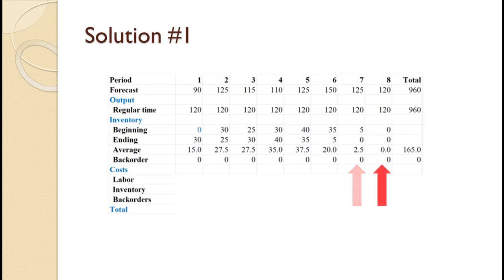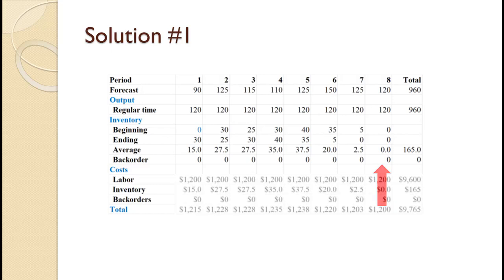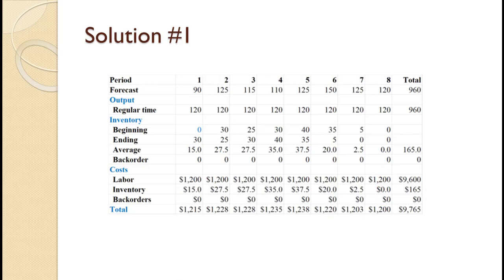For period 8, production and demand are both 120 so inventory remains at 0 and the average inventory is 0. The plan is costed out exactly as it was in the first two tutorials. In this and the remaining tutorials on aggregate planning, the cost of the plans will be shown but not narrated. The final cost of this plan is $9,765. Do you understand how to get this or do you need to review prior tutorials?